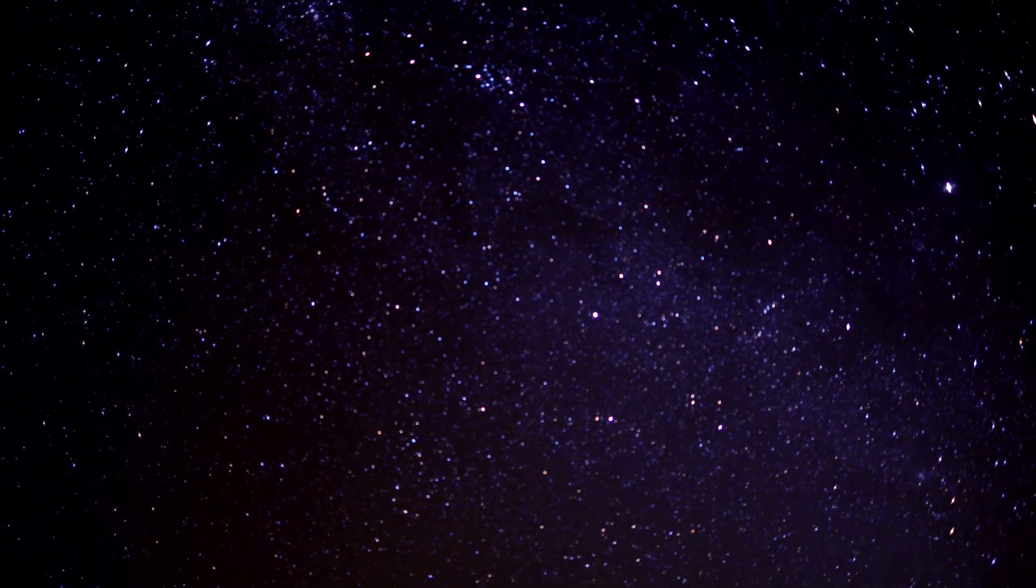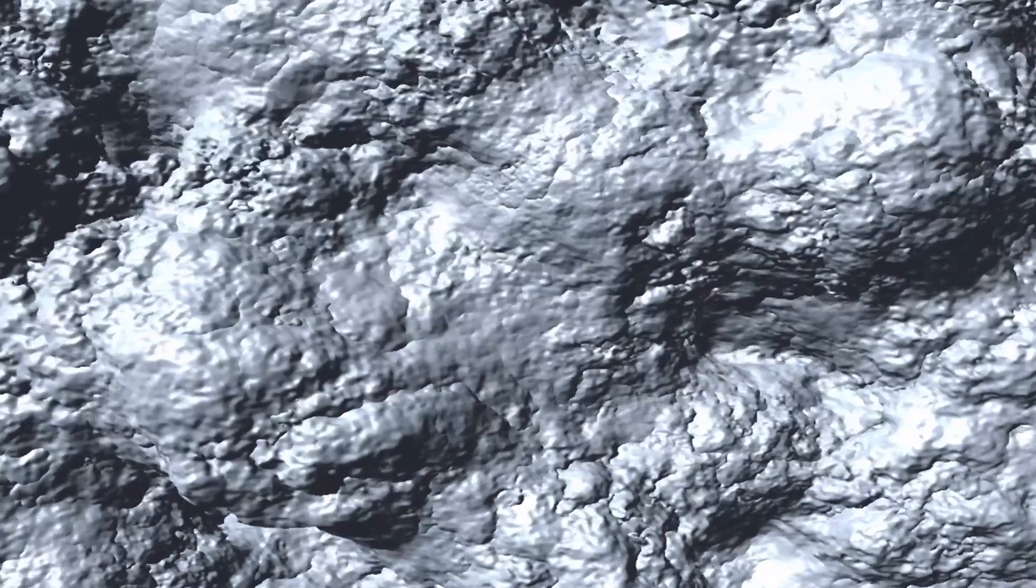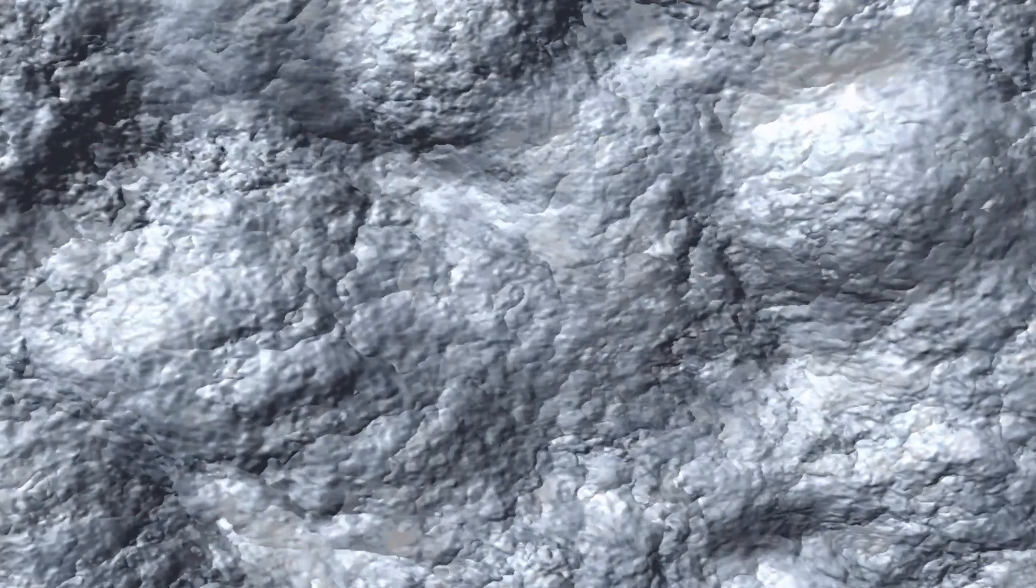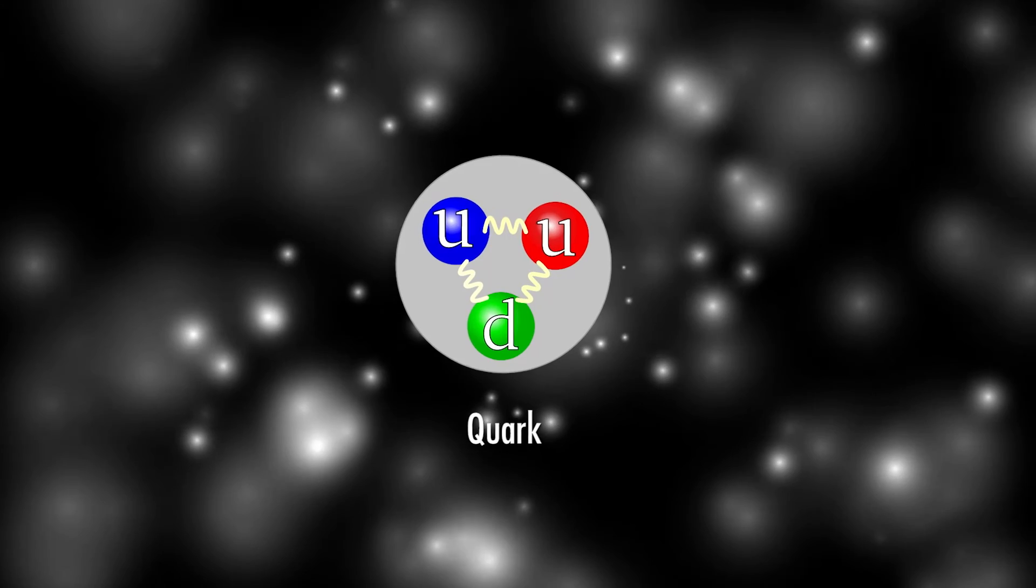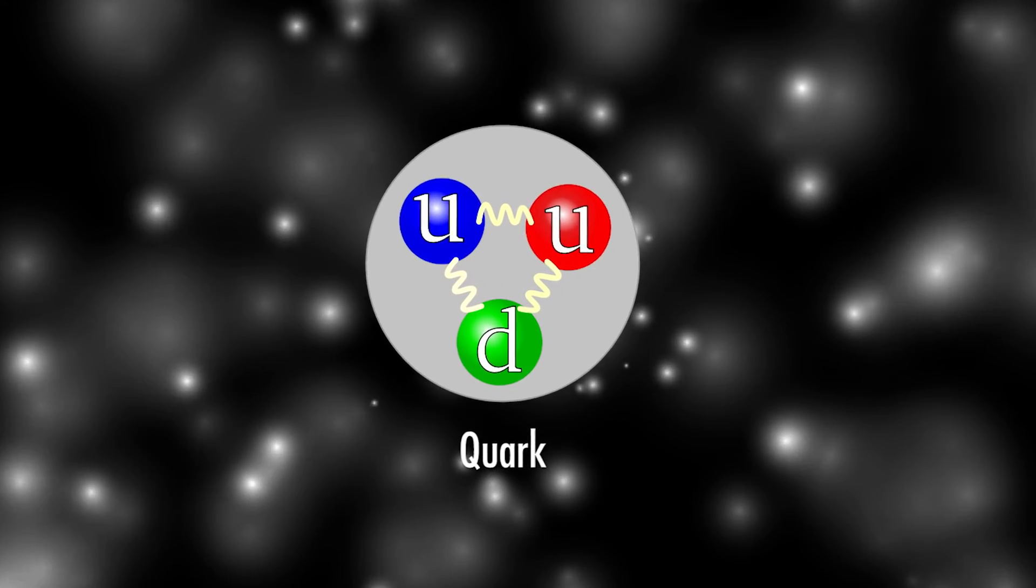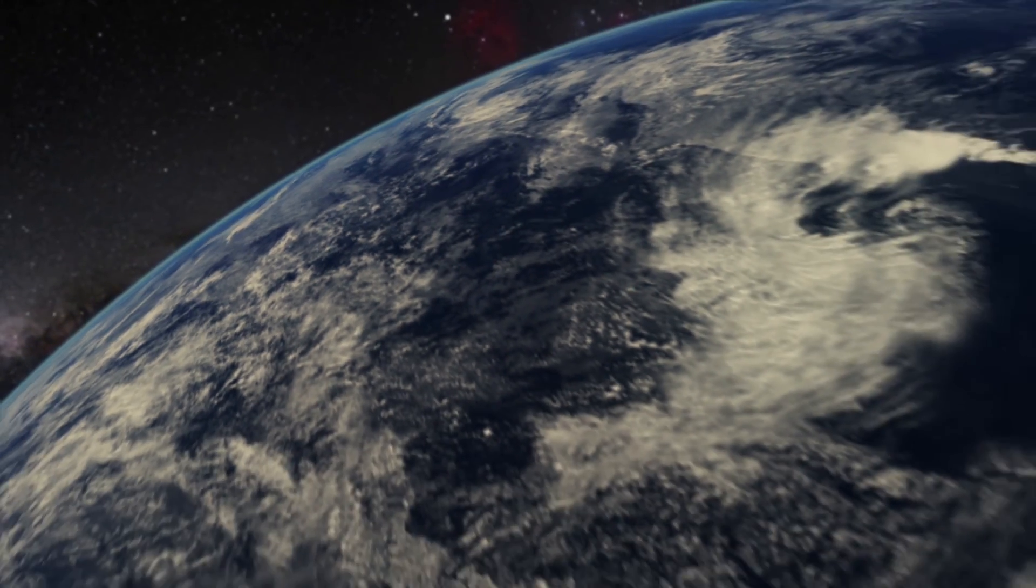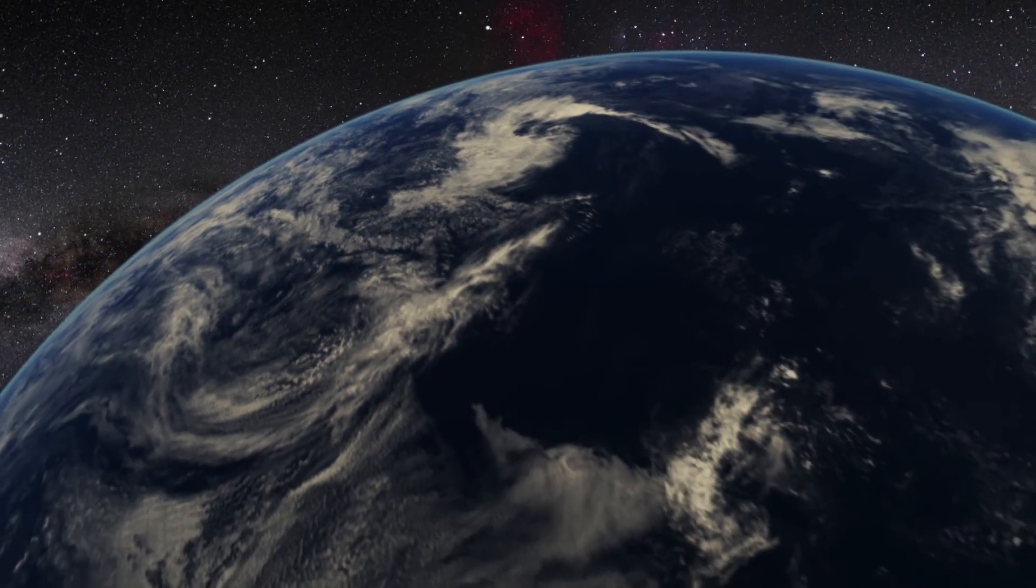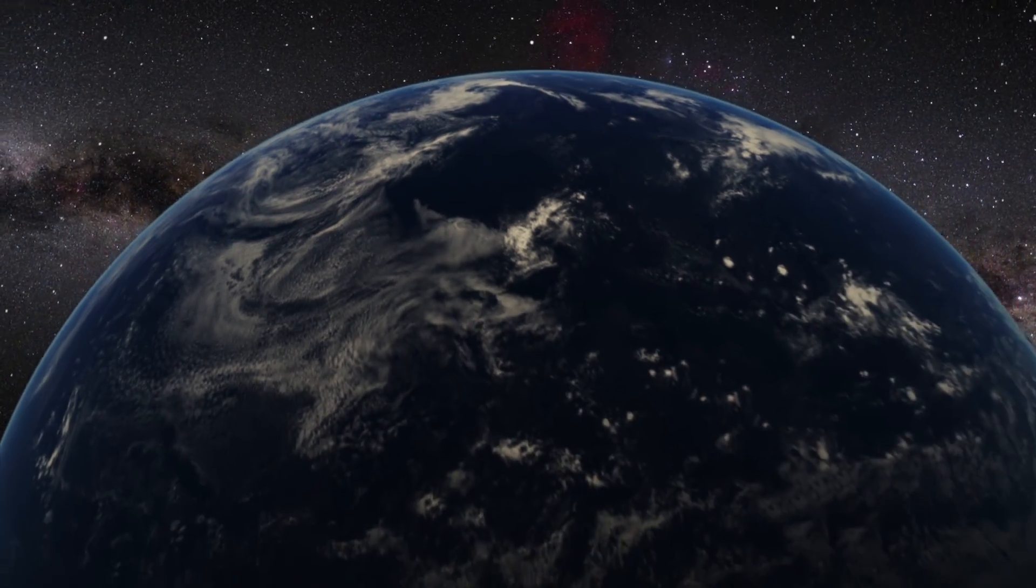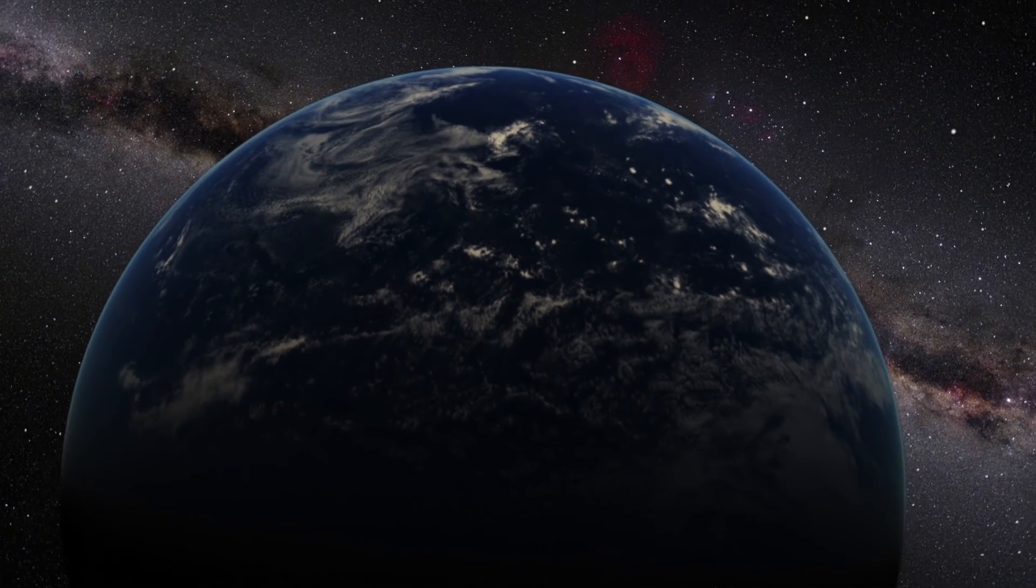The first thing we're looking for is a fundamental difference between matter and antimatter. Now this has been seen in particles called quarks before, but that's not enough to explain why the universe is dominated by matter over antimatter. Our best bet for that is something rather technical called leptogenesis, but it's connected to neutrinos.